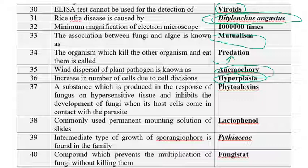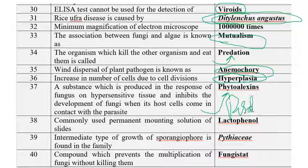Hypertrophy and hyperplasia symptoms can be seen in club root of cabbage, caused by Plasmodiophora brassicae. Its life cycle was discovered by Voronin, a Russian scientist and student of Anton de Bary. Potato wart life cycle was also discovered by Voronin. Phytoalexins are substances produced during hypersensitive reaction that inhibit the development of fungi. Phytoalexins were first discovered by Muller and Borger in 1940, and the first phytoalexin is pisatin.